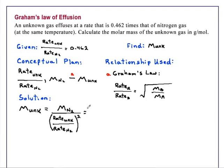This equals 28.02 grams per mole, the molar mass of nitrogen N2, and our ratio of rates is 0.462, which we must square. This gives us our answer of 131 grams per mole.